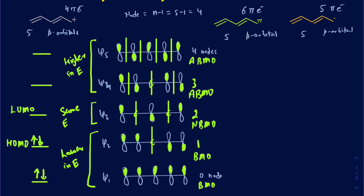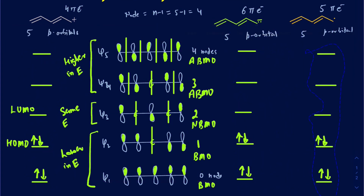Now copying this setup for the anion and the radical — what's the difference? In the case of the anion, there are six pi electrons, so we fill up to ψ3, making ψ3 the HOMO, and the orbital right on top of that is the LUMO. For the radical with five pi electrons, ψ3 gets one electron, which still makes ψ3 the HOMO, and the one on top is the LUMO.